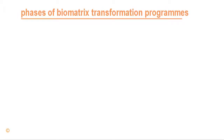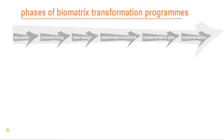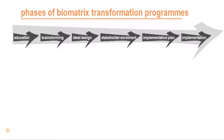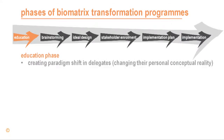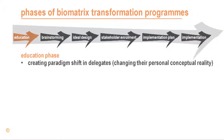In summary, the different levels of reality are incorporated into the different phases of the Biomatrix programs as follows. The education phase creates a paradigm shift in delegates, transforming them into systems thinkers by changing their personal conceptual reality, especially from a transdisciplinary perspective — both the web and the field perspective.